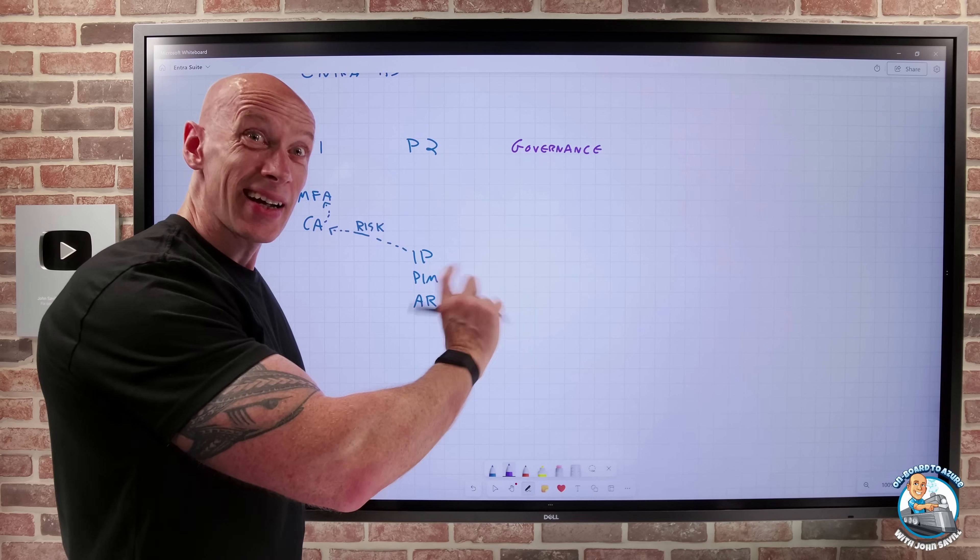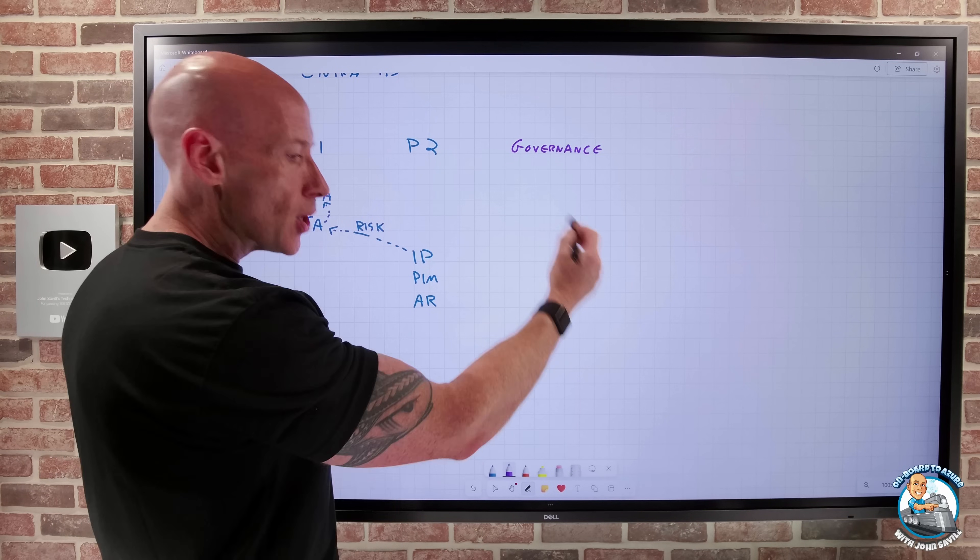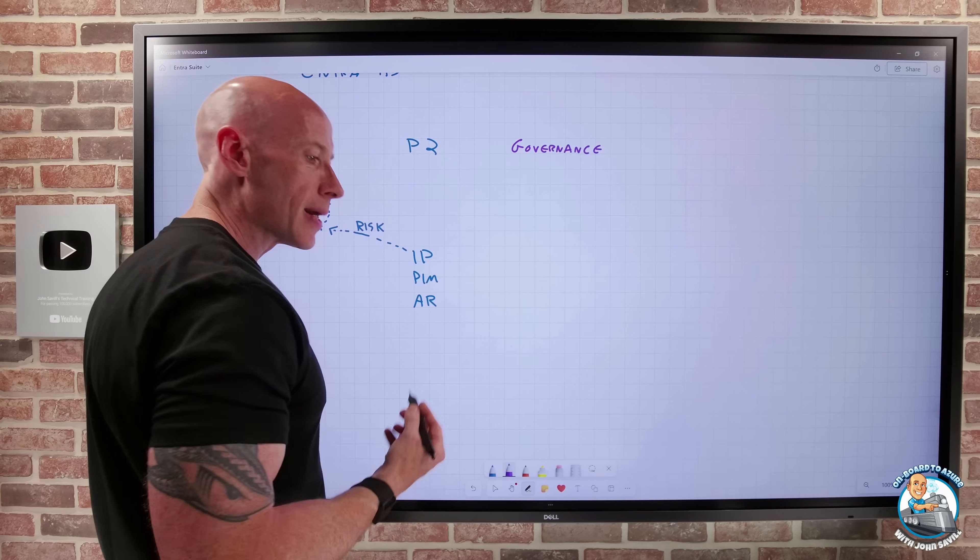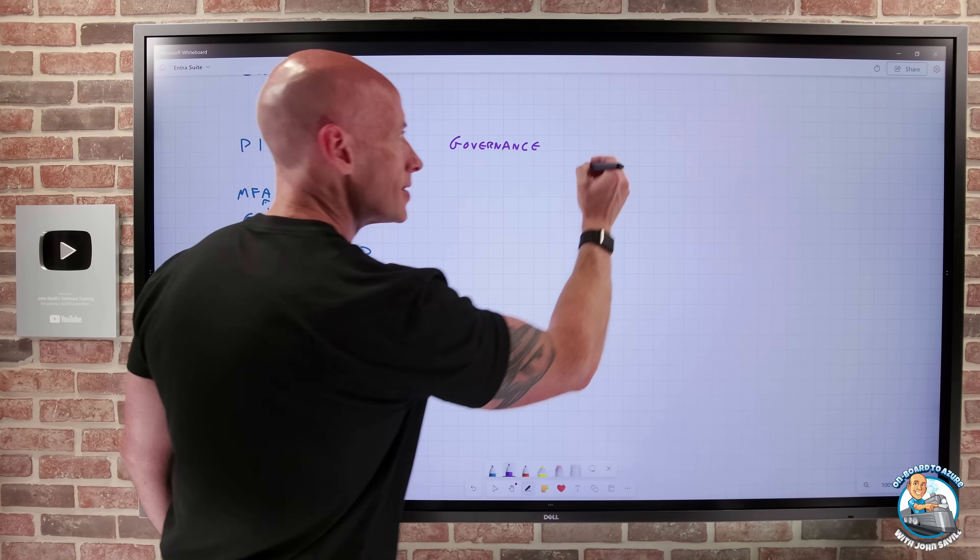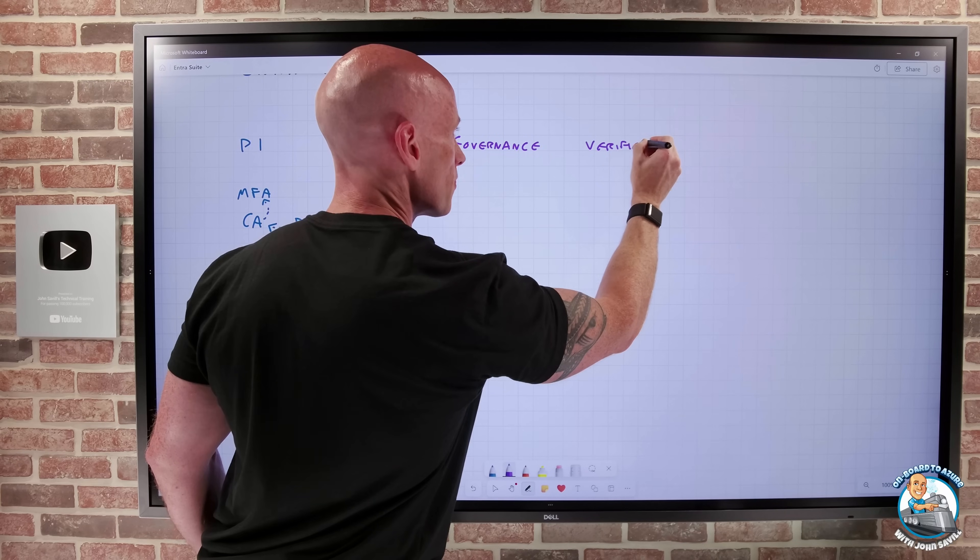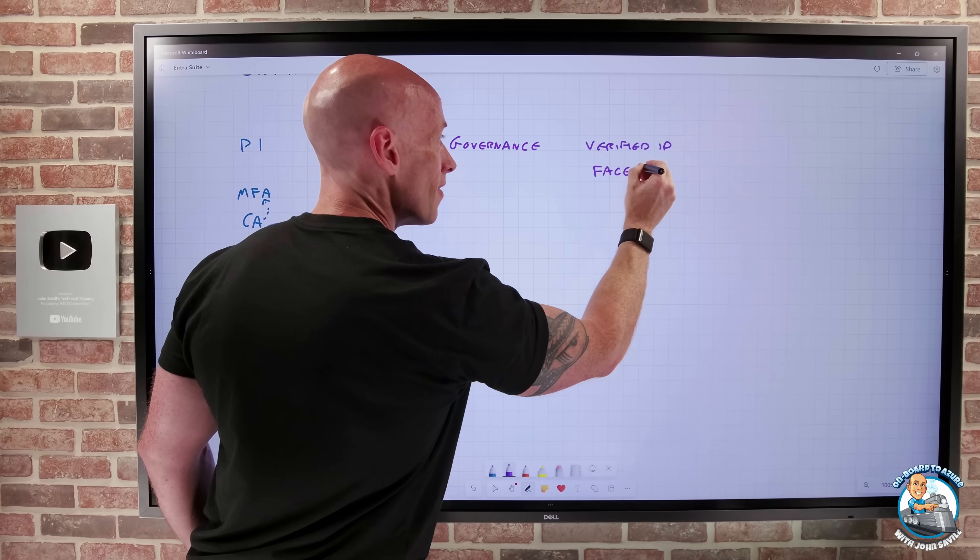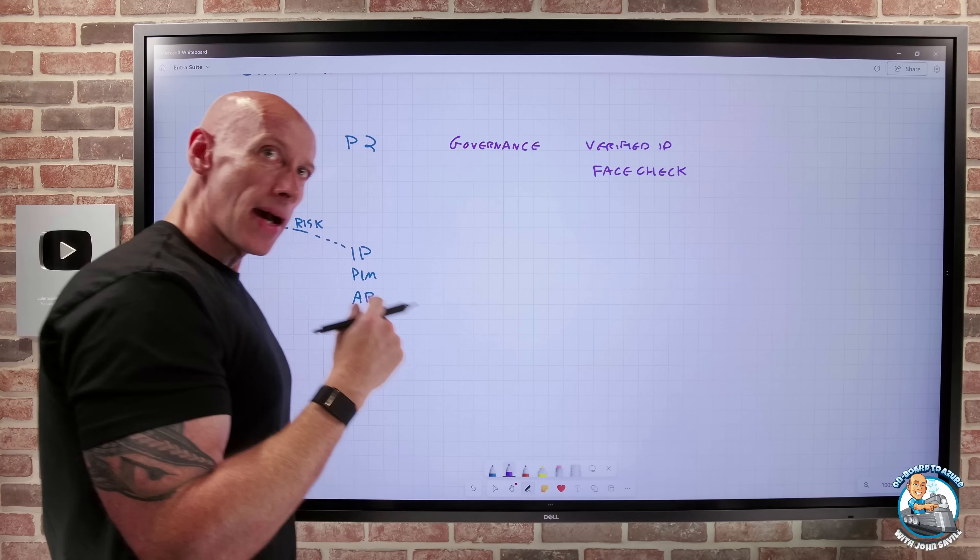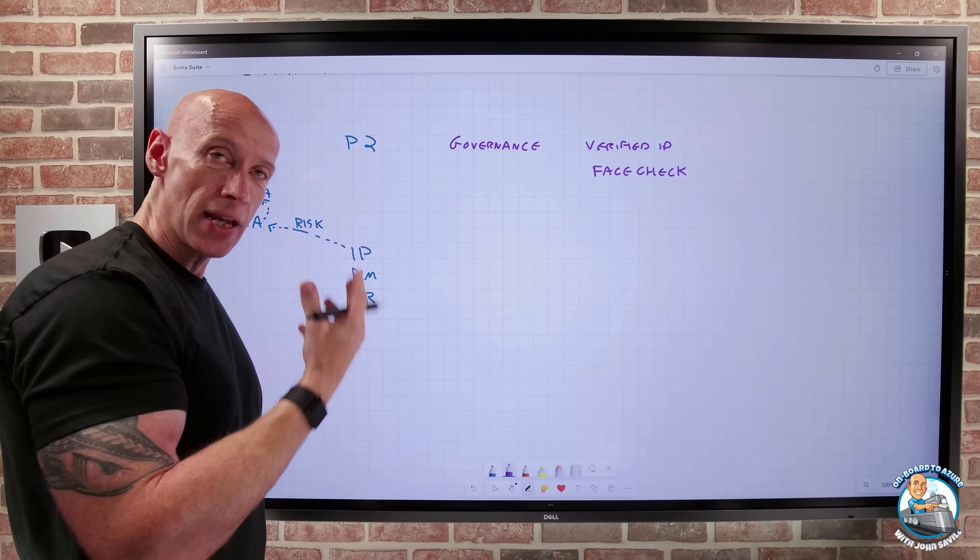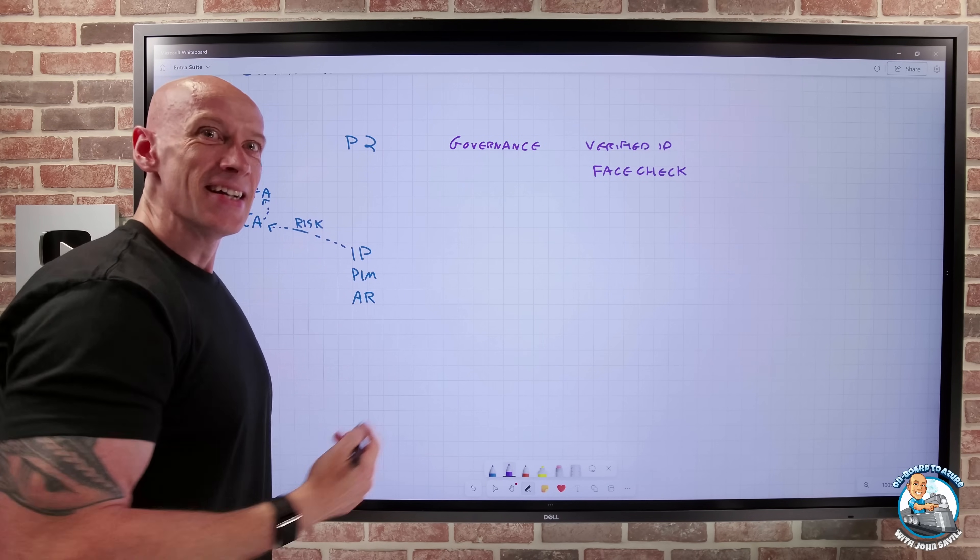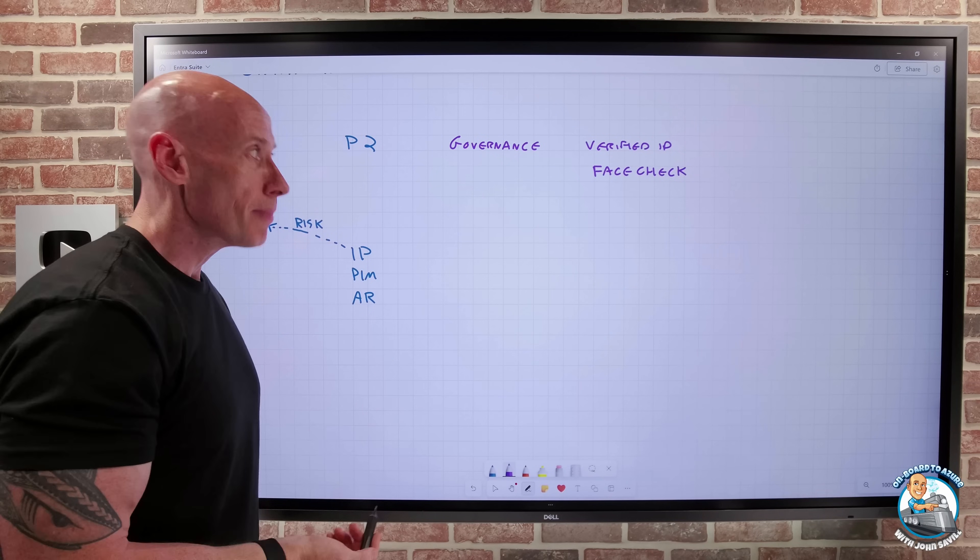I can add my own custom actions with logic apps for those entitlement managements. For the access reviews, there's machine learning. So it builds on those lifecycle capabilities. And then if I think about sort of decentralized identity and that verified ID, there were premium offerings like FaceCheck. FaceCheck enables me to compare a photograph on some verified credential to a real-time picture of the person. There's a liveness check to make sure it's actually that person is there. And you can even combine that with things like the more advanced entitlement management.